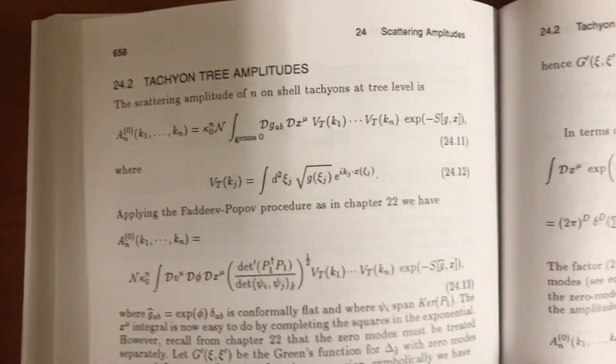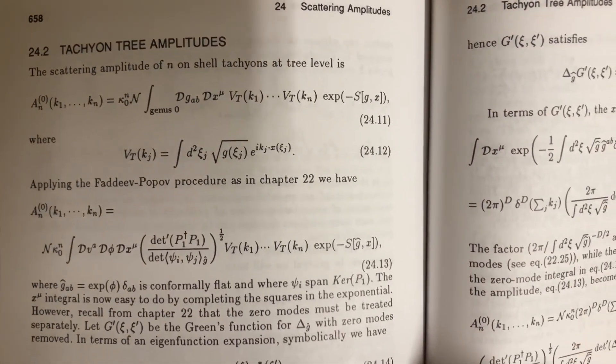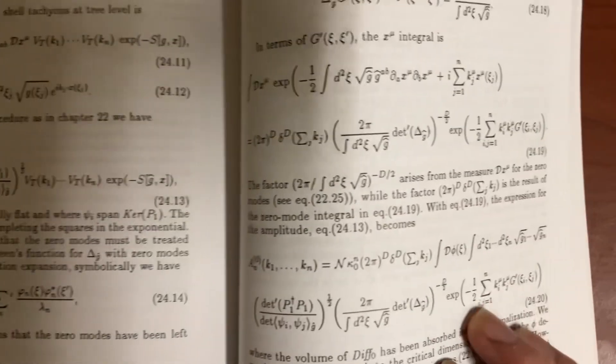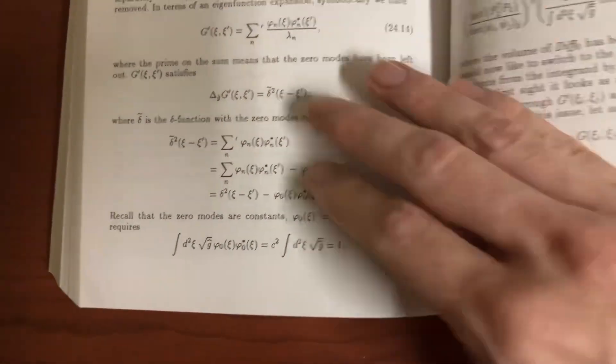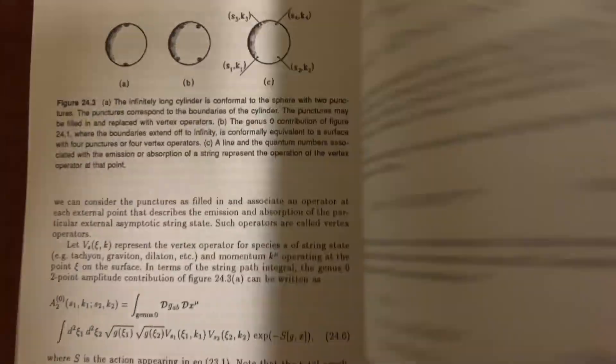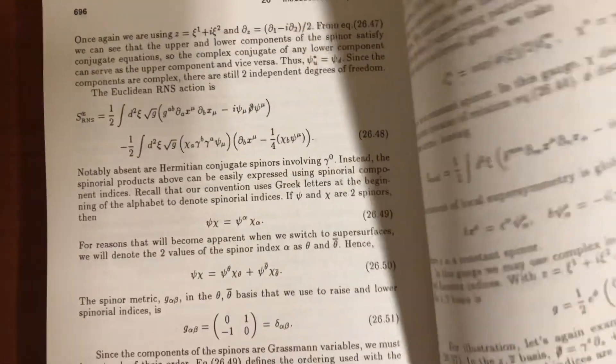The scattering amplitudes. It's the tachyon tree amplitudes. What the heck? So there's ways when particles smack into each other and you can put together this equation that tells you where the particles are going to go.